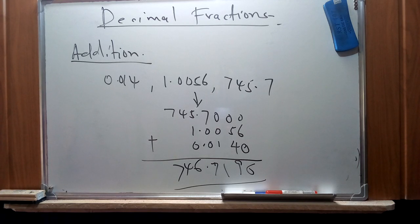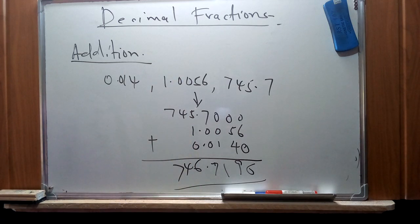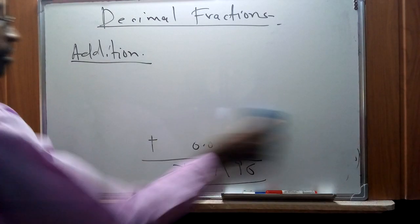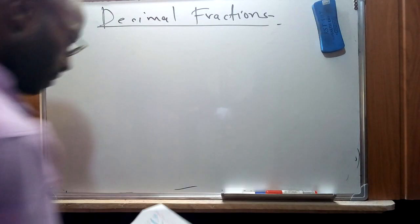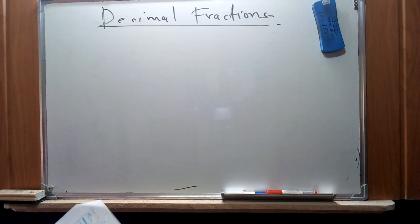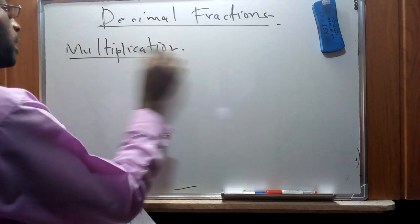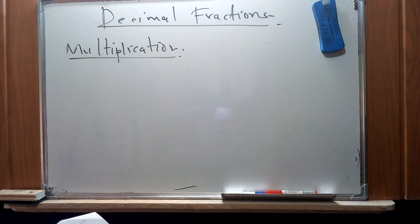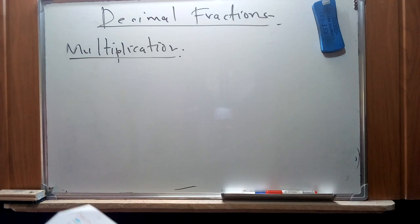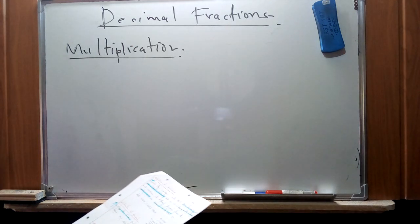For multiplication of decimal fractions, we first ignore the decimal places and perform a normal multiplication as with integers, then find the sum of the decimal places in the factors. Finally, we insert the decimal point in the product. This three-step approach ensures the correct position of the decimal point in the result.